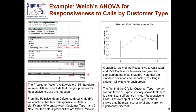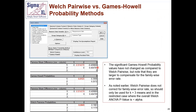Running Welch's ANOVA for responsiveness to calls, the pairwise probabilities show that mean responsiveness for group 1 versus group 2 is significantly different, but all others are not. Rerunning with Games-Howell, we get the same significant result for 1 versus 2, but notice the p-value is higher because we're adjusting for the family-wise error rate. If you have more than three groups, use Games-Howell for post-hoc multiple comparison of means.